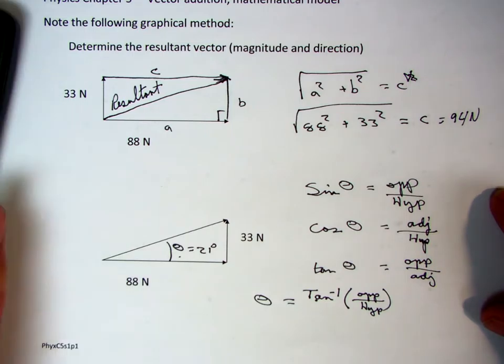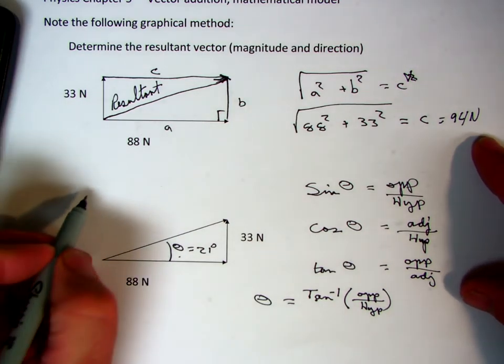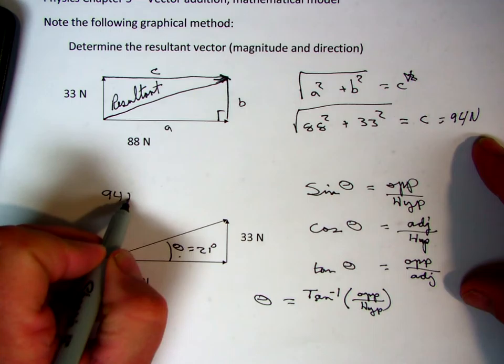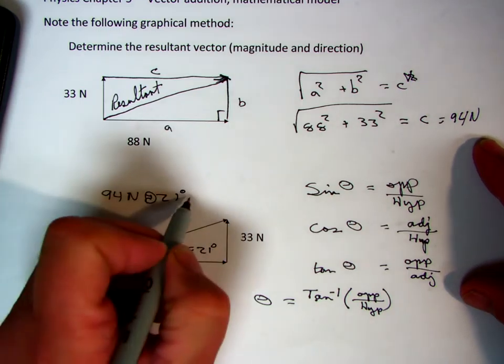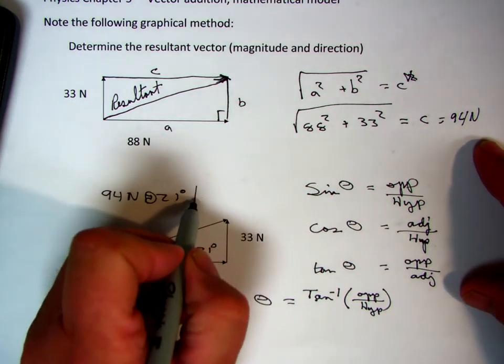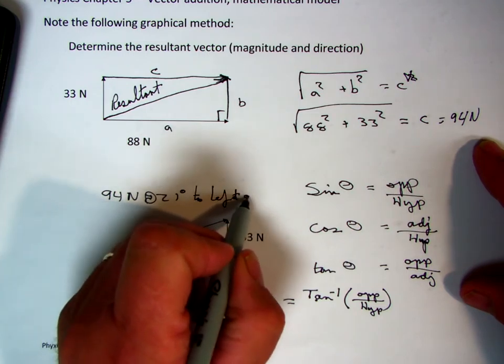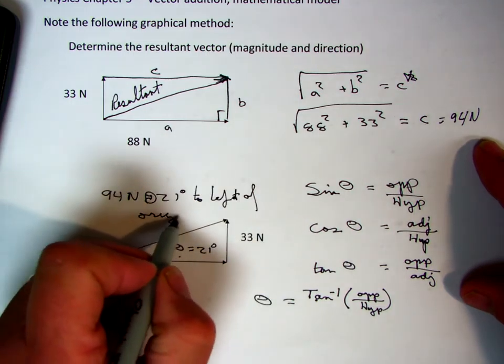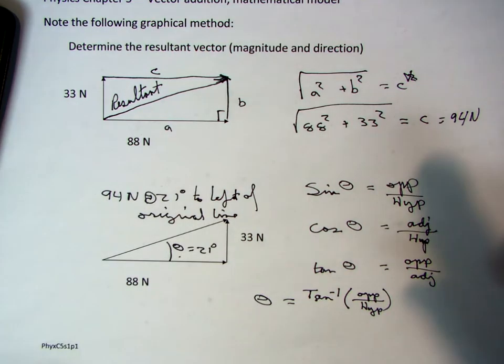So the way I would label the value of this vector that I did from the previous one, I would say it's 94 newtons at 21 degrees to the left of my original. And you have to specify direction.